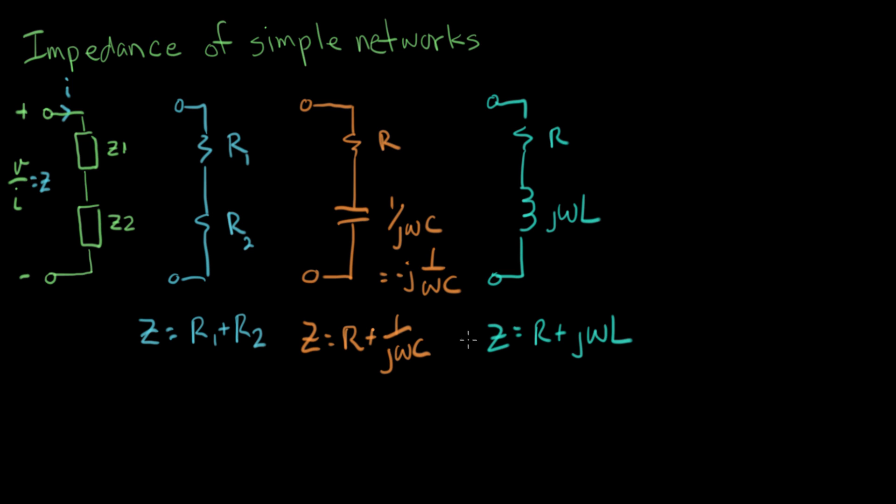So the way we write an impedance in general as a rectangular complex number is we say Z equals R plus, and the letter we use is X.